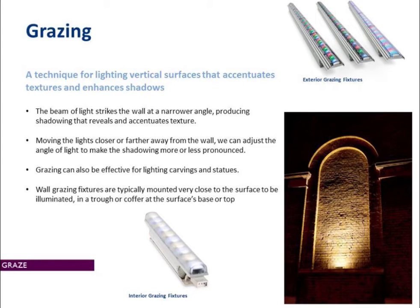The first application we're going to look at is wall grazing. This is a technique for lighting vertical surfaces, and it often accentuates textures and enhances shadows. The fixtures used for wall grazing typically have narrower beam angles, and as the light strikes the wall at that narrow angle, it produces shadowing that reveals and accentuates texture. Grazing is also effective for lighting carvings and statues — you're able to highlight the textures and the details.